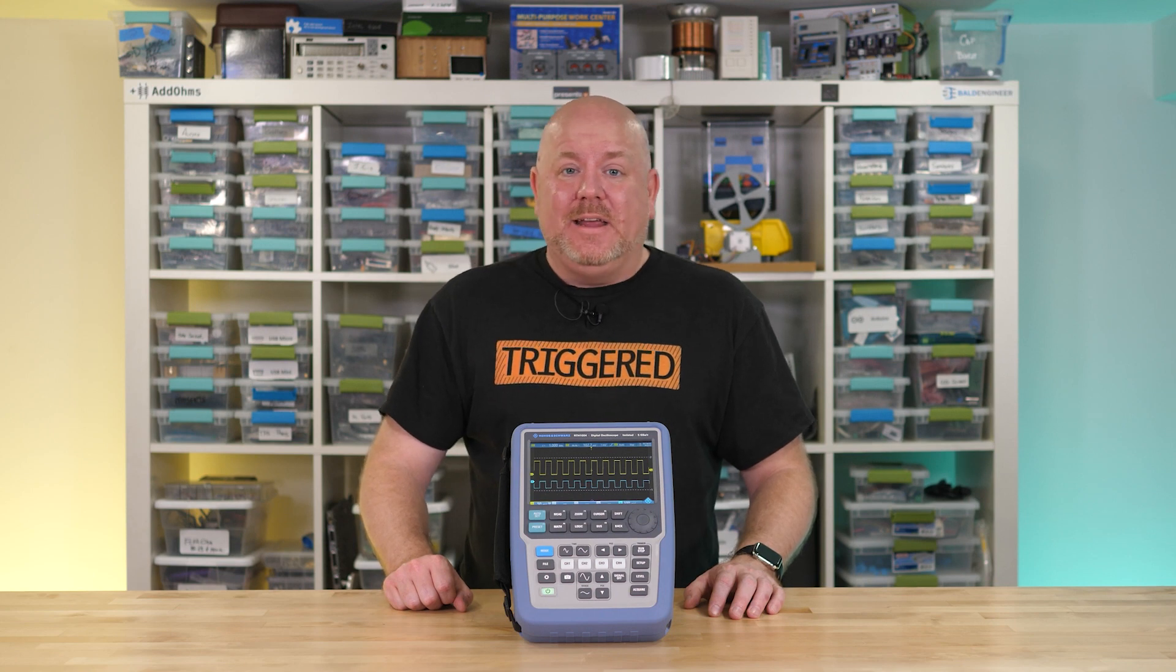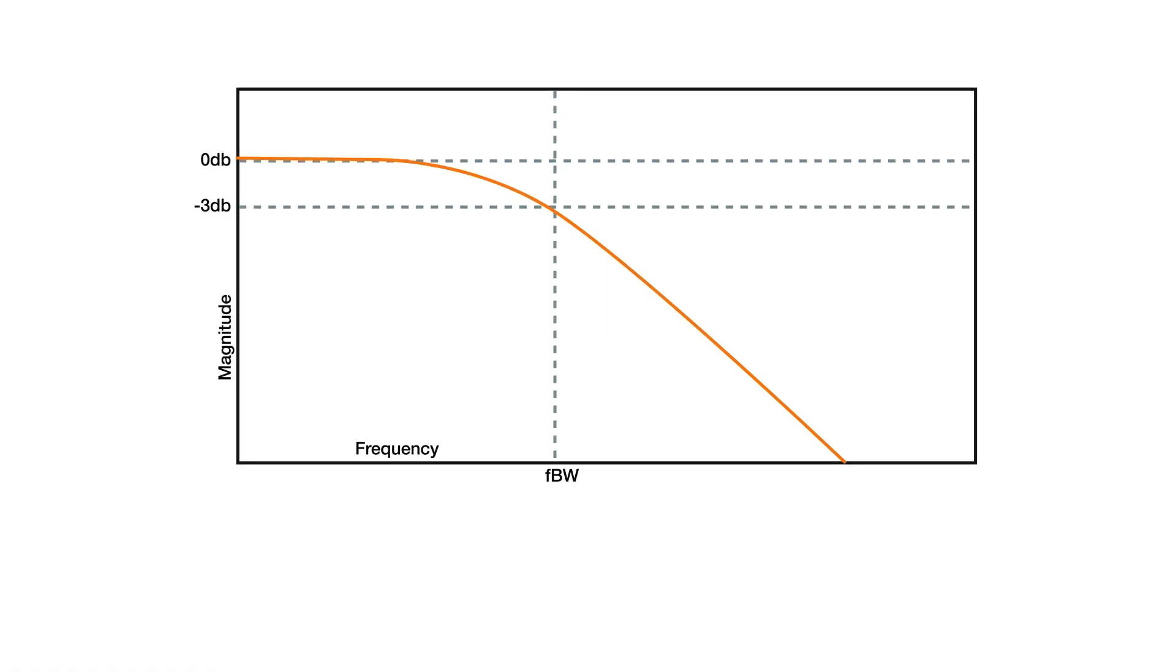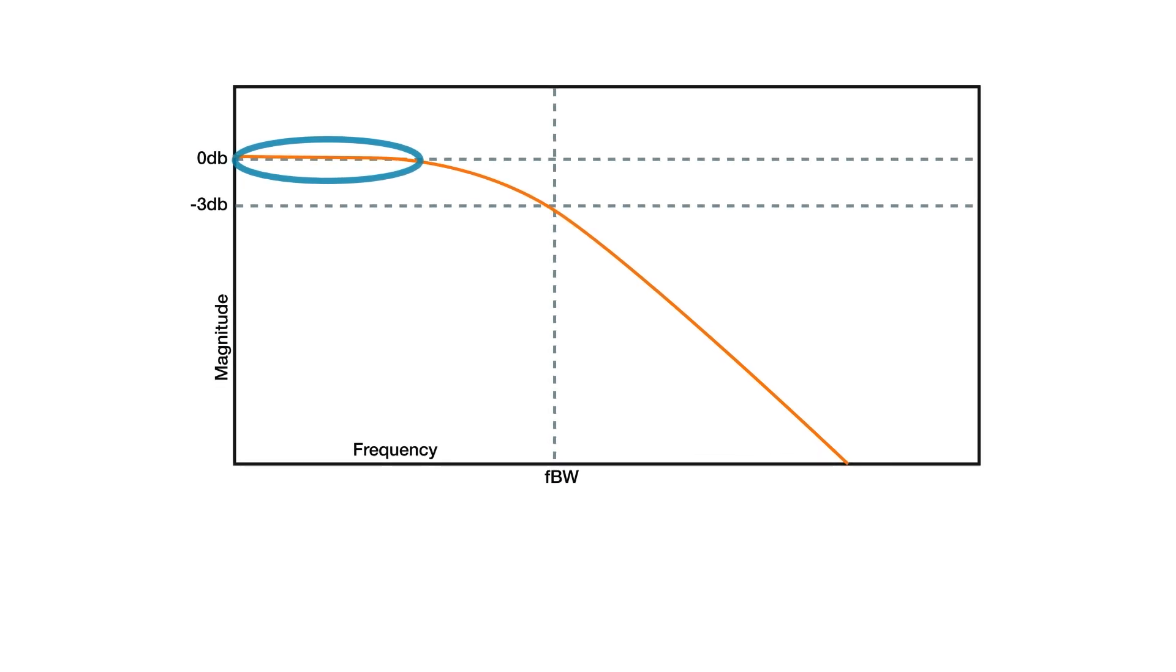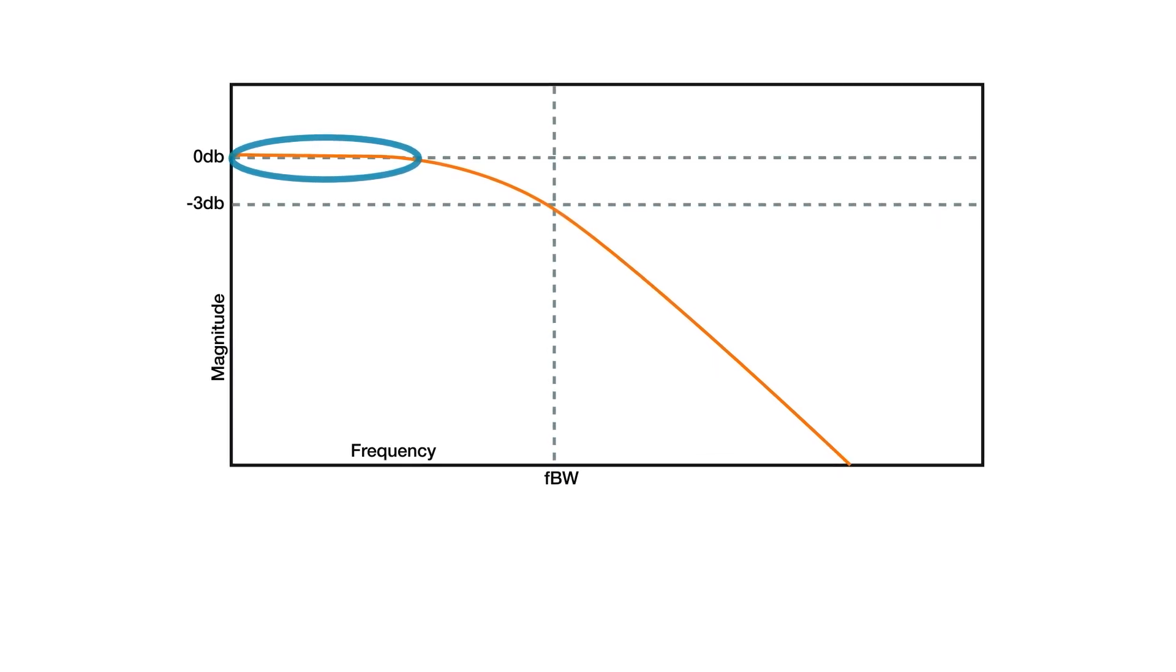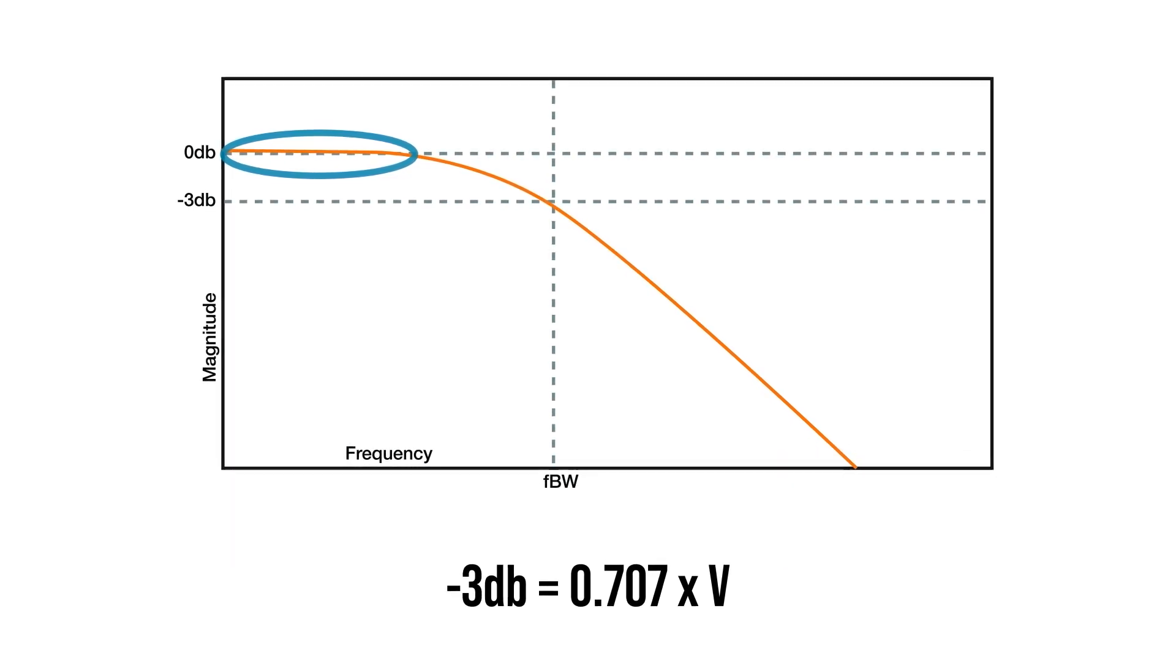And to answer why that is, we have to go back to the response curve I showed earlier. Remember, a bandwidth gets defined where a filter, or in this case oscilloscope, attenuates the signal by 3 dB, which works out to be about a 30% reduction in voltage.